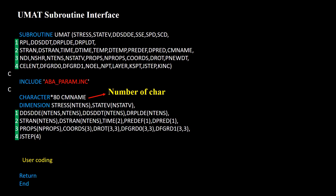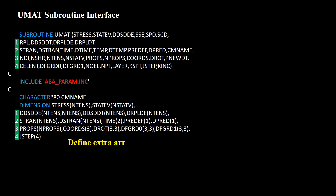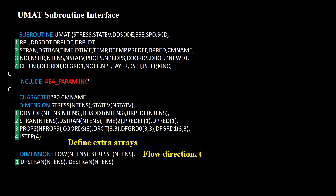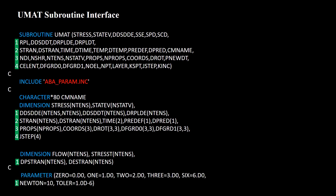The first line defines the number of characters in the name of the material. Stress, strain, and strain increment are one-dimensional arrays of length NTENS. The Jacobian matrix is a two-dimensional array of size NTENS by NTENS. Additional arrays such as flow direction and trial stress with length NTENS are defined, as well as plastic and elastic strain increments. Frequently used constants such as zero, one, two, three, and six are defined, along with the maximum number of iterations for the Newton method and its tolerance.